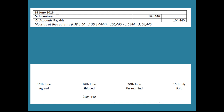We debit inventory and credit accounts payable, calculated as $100,000 US times 1.0444 — because one US dollar equals 1.0444 Australian dollars. That gives us $104,440 Australian. Strictly speaking, this is a foreign currency accounts payable. Nothing happens until we get to the financial year-end. At that point we still owe that accounts payable — and while we may or may not still hold the inventory, the inventory itself is not a foreign currency item.